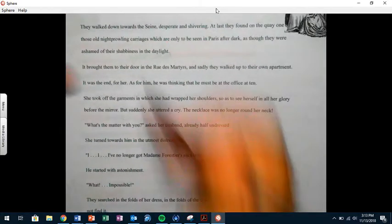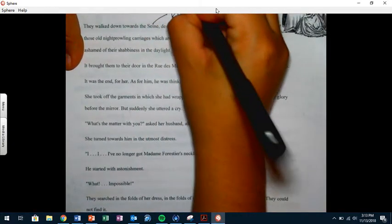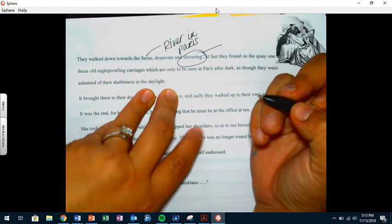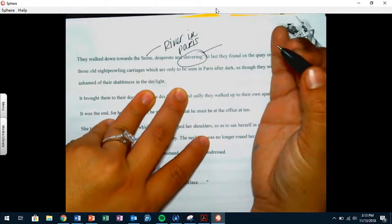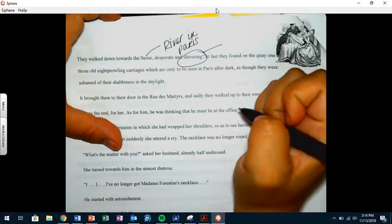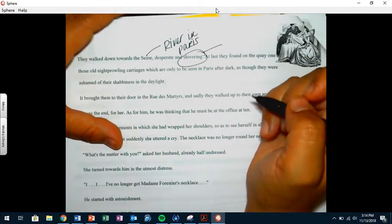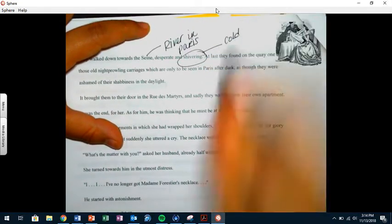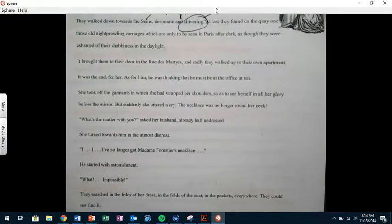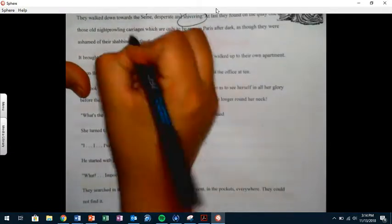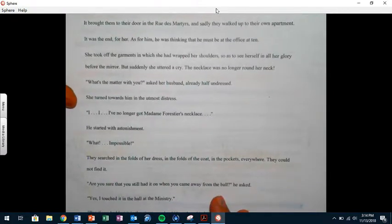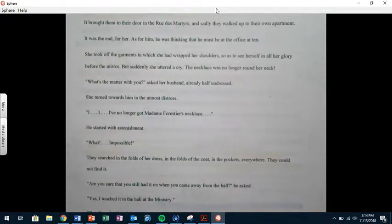They walked down towards the Seine, which is a river in Paris. They were desperate and they were shivering. What can we infer Angela? It was cold. We can infer that it was cold. At last they found on the quay one of those old night prowling carriages which were only to be seen in Paris after dark, as though they were ashamed of their shabbiness in the daylight. So they found a carriage, kind of like in Cinderella. Are you making the connections?